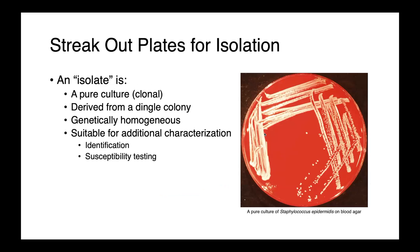Once we have our isolated colonies, our goal is to get an isolate — we would pick one of those isolated colonies from our most distal streak and subculture that, probably to blood agar, so that we can have a pure clonal culture derived from a single colony. The advantage is that all organisms growing on this plate are genetically homogenous — it's all one isolate — and this is what's required for additional characterization. This is what we would move on to identify and do susceptibility testing on in order to provide the clinician with data to treat their patient.